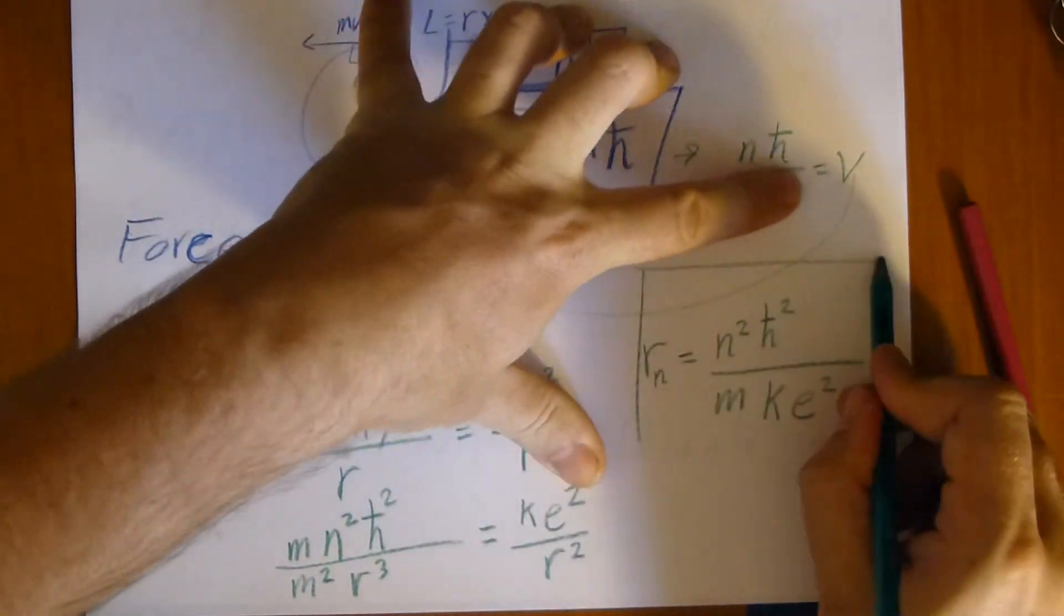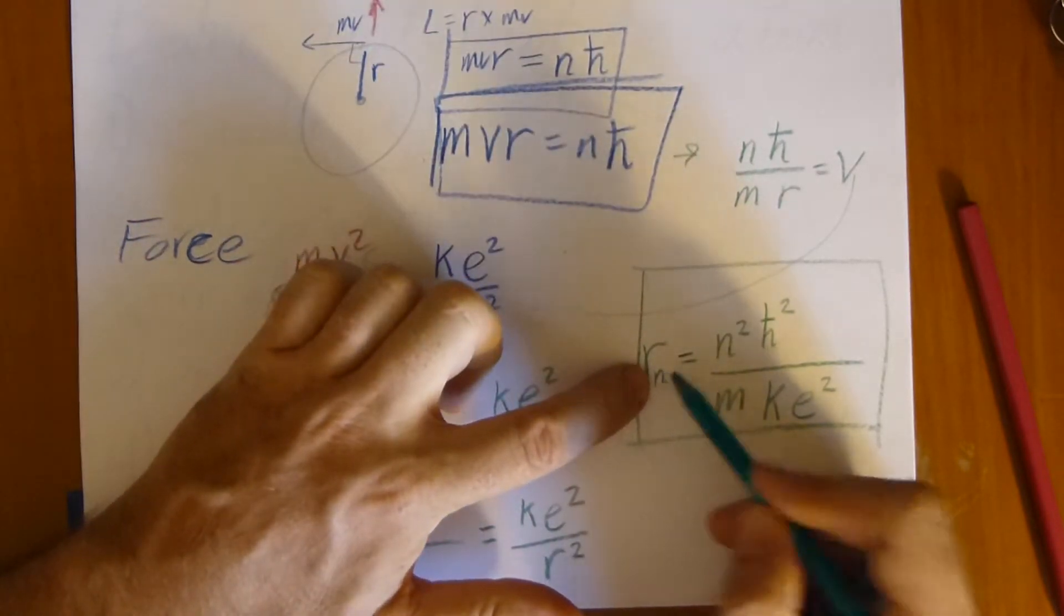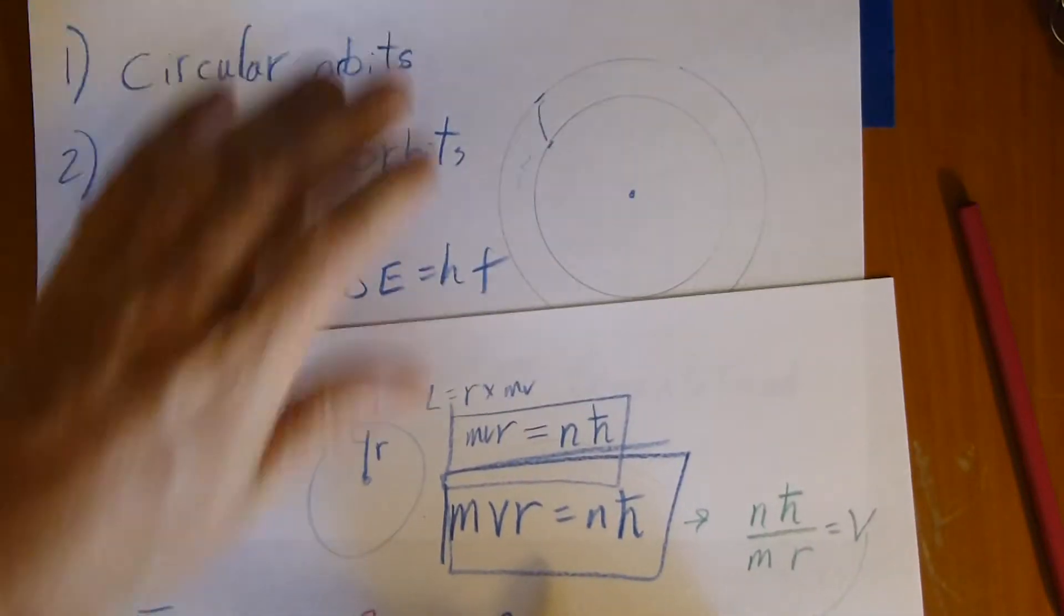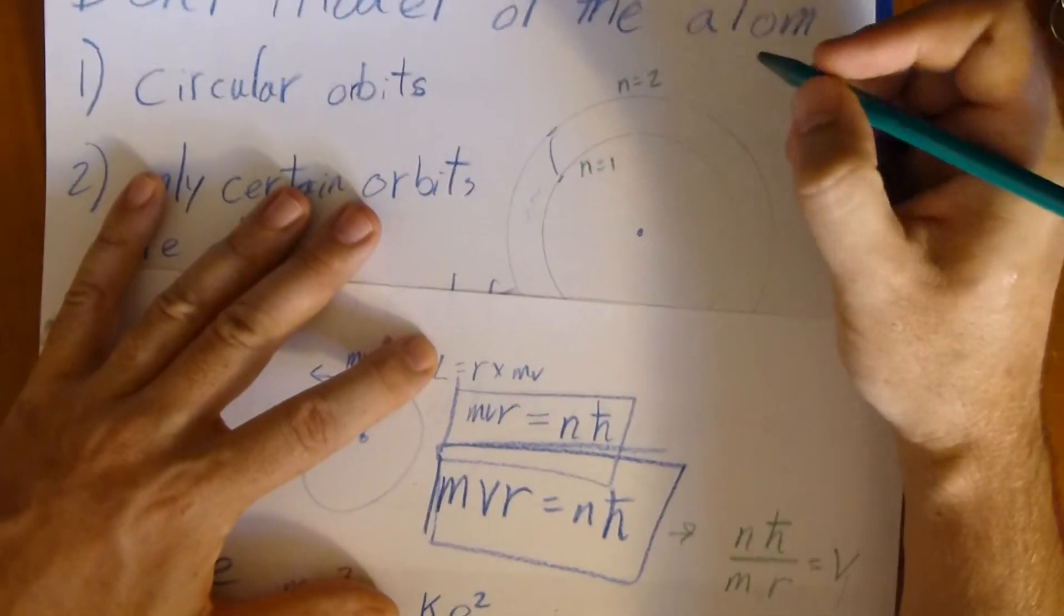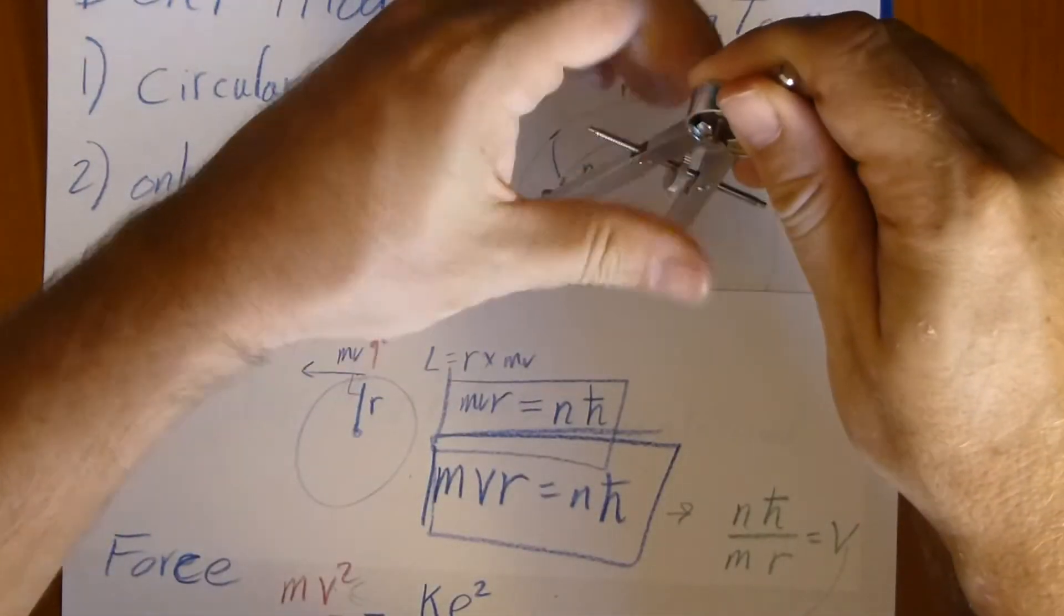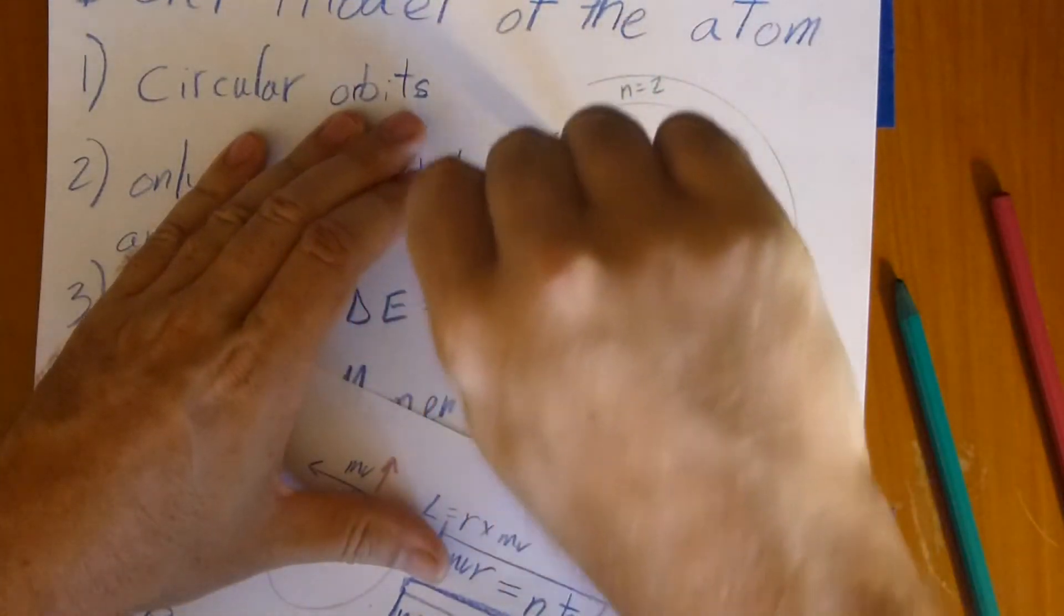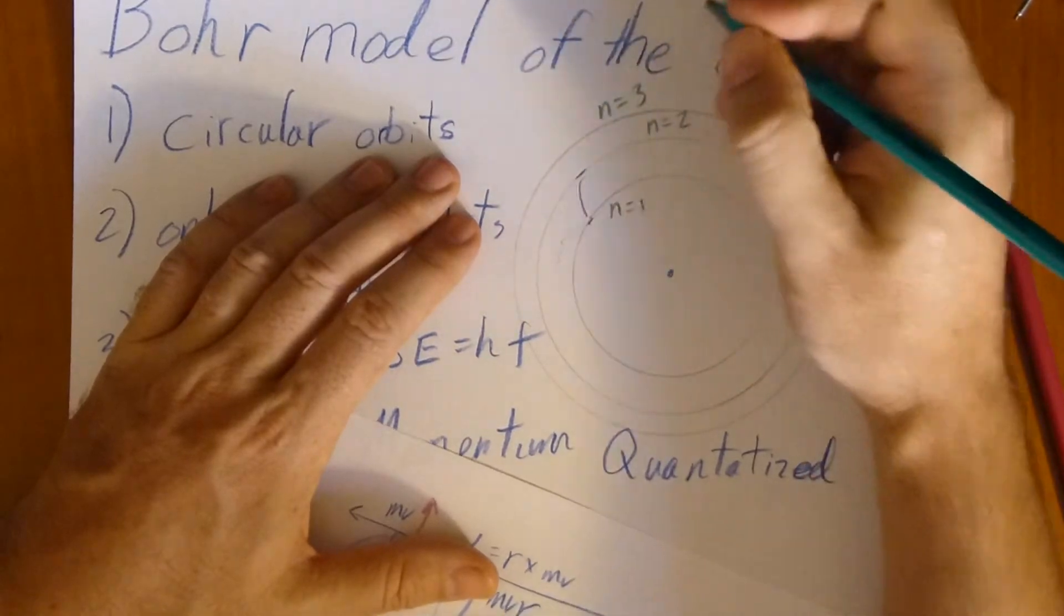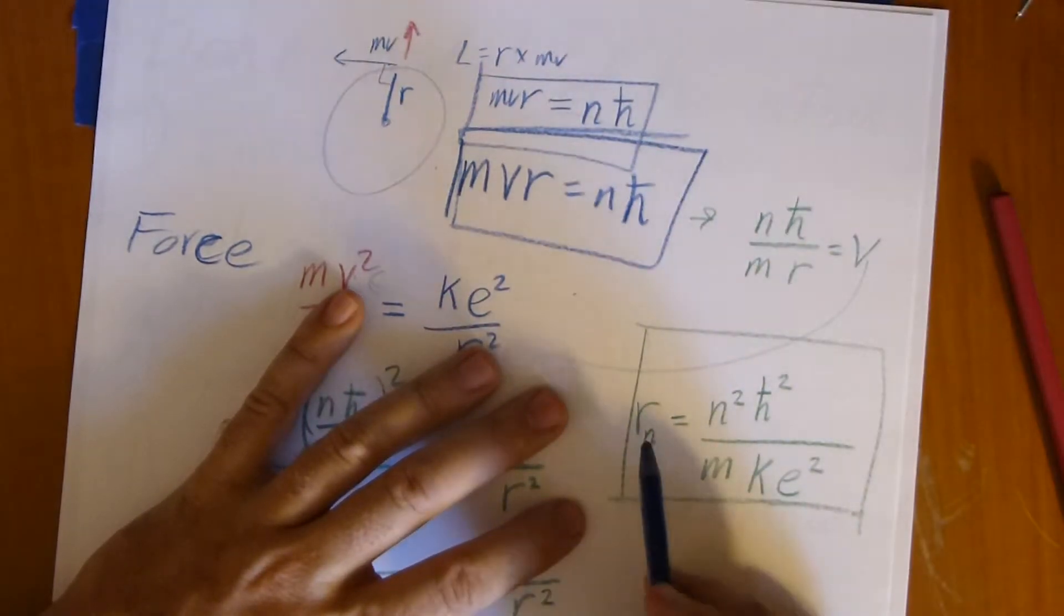So called, now, if we make this, say this is N equals 1, so these are all different levels. We have N equals 1, N equals 2, and we can go out further, and further, and further, we can make N equals 3 if we wanted. N equals 3, and so on and so forth. This is the radius.